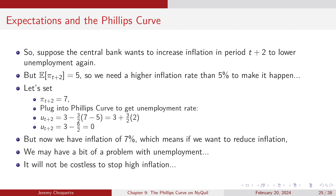Let's assume 7% inflation is too high — the central bank wants low inflation again. How do we get lower inflation? You lower the inflation rate. But remember, unemployment is set around deviations of inflation from expected inflation, and we're currently expecting 7%.